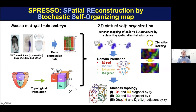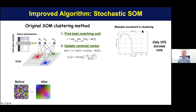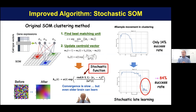The original SOM-plus-link method had a problem. When we applied the regular SOM-plus-link method, there are two steps: at the first step, we find the best matching unit from the learning vector, and at the second step, we update the central vector of the maps. However, when we applied this directly, our prediction rate was only 14% due to poor optimization and very fast convergence. So we introduced a stochastic function so that the convergence is slow, but even older stages can learn more. This actually improved our success rate dramatically to 84%.